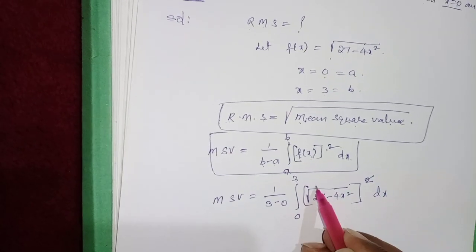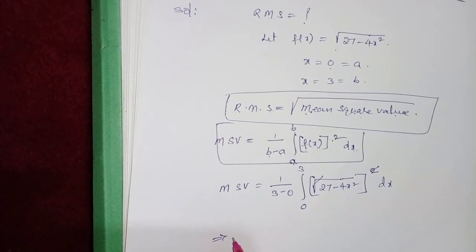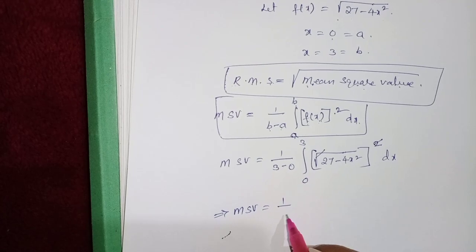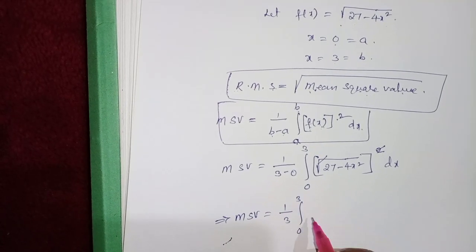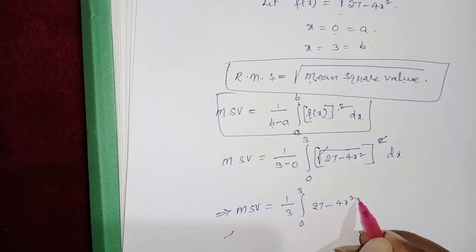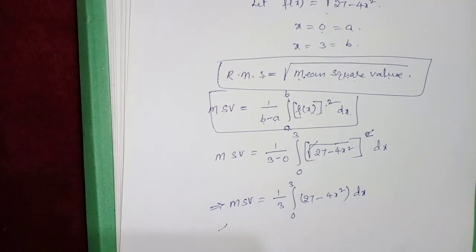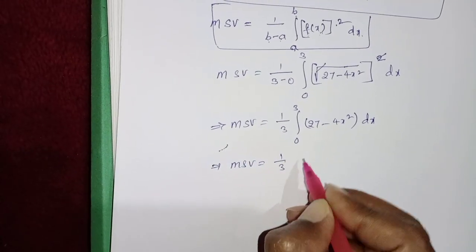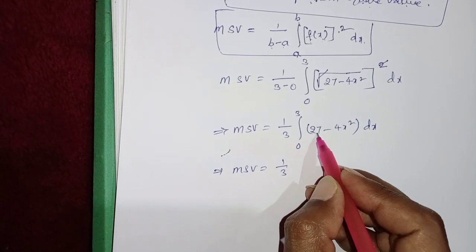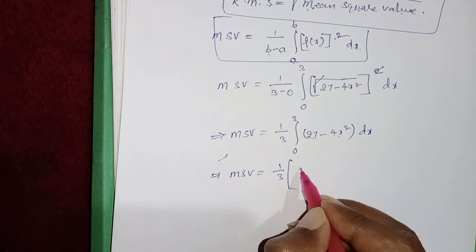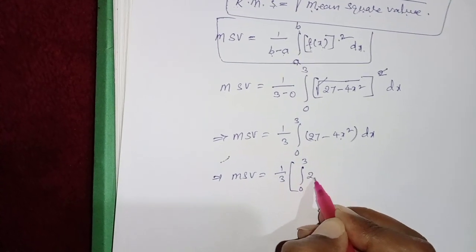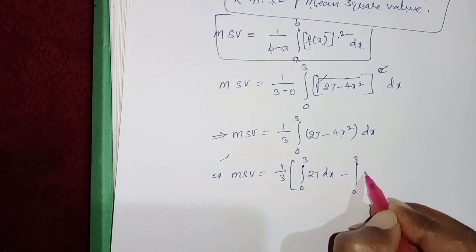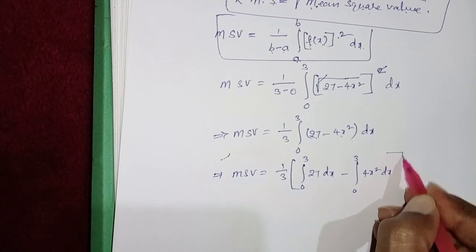So MSV = (1 / (3 - 0)) × ∫[0 to 3] (27 - 4x²) dx = (1/3) × ∫[0 to 3] (27 - 4x²) dx. Now split the integration into two parts: (1/3) × [∫[0 to 3] 27 dx − ∫[0 to 3] 4x² dx].